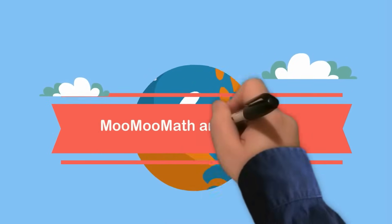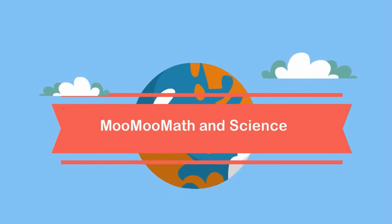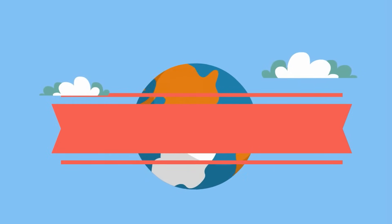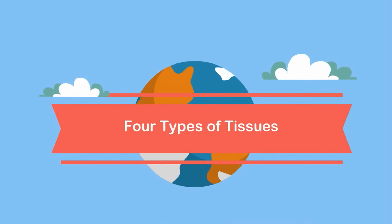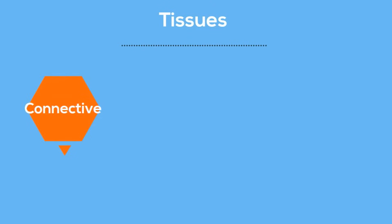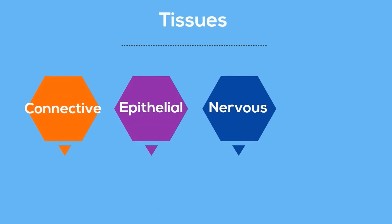Welcome to Moo Moo Math and Science. In this video I'd like to talk about the four types of tissues found in our bodies. I'll discuss connective tissue, epithelial tissue, nervous tissue, and muscle tissue. So let's get started with connective tissue.